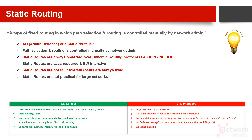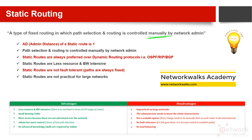Static routing is a type of fixed routing in which path selection and routing is controlled by the network admin, which means it is not dynamically controlled — it is manually controlled. This gives us more control as a network admin when doing configuration on network devices, on routers, on Cisco routers, Huawei routers. In dynamic routing, we have less control because routing is controlled by the routing protocol.